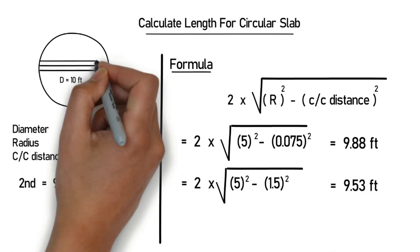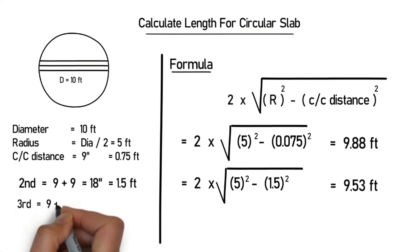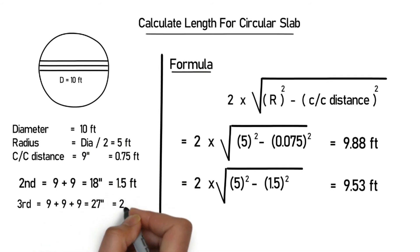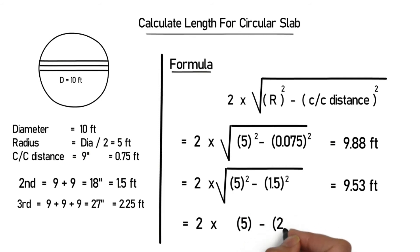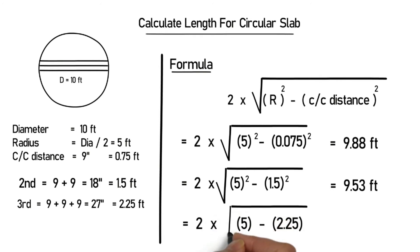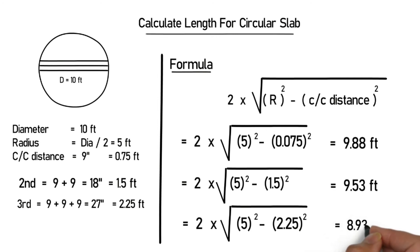For the third bar, we use the same method. The center to center distance is 9 + 9 + 9 = 27 inches. Converting to feet gives 2.25 feet. Putting the third distance into the formula: 2 × √(5² − 2.25²). After calculating, you will get 8.93 feet.